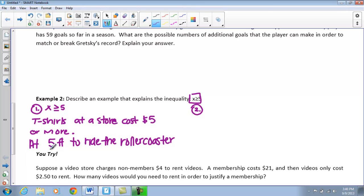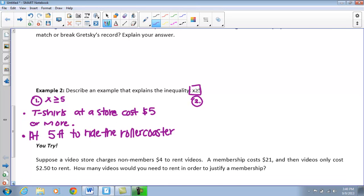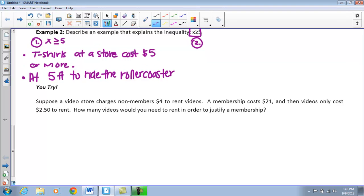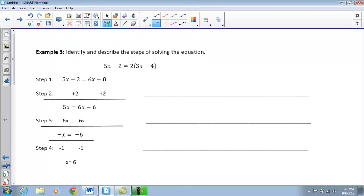What this means is if I'm 5 feet or taller than I can ride the roller coaster. What I want you guys to do now is pause your video and go ahead and come up with a second example. We're going to save the U-try once again for class tomorrow for this second one. But we're going to take a look at our third example here.